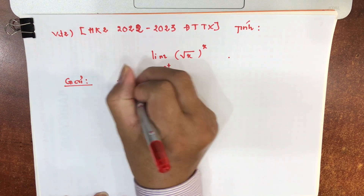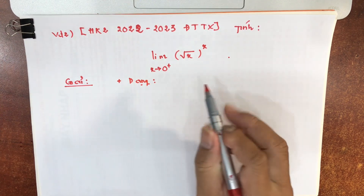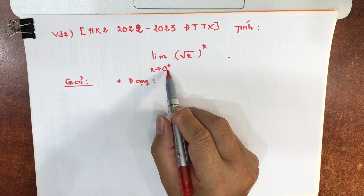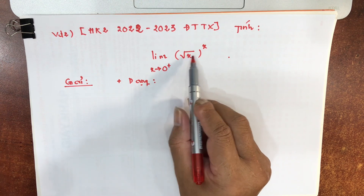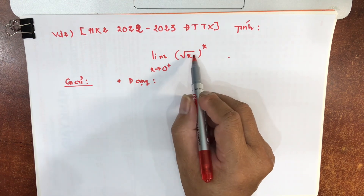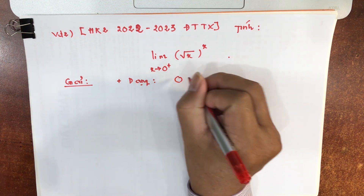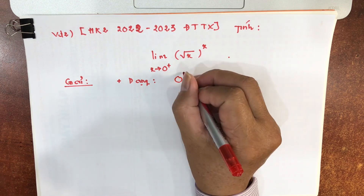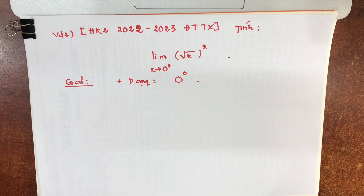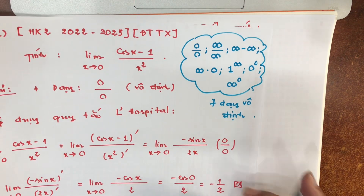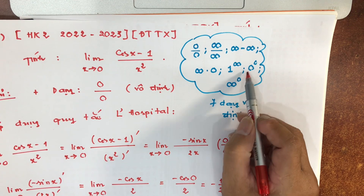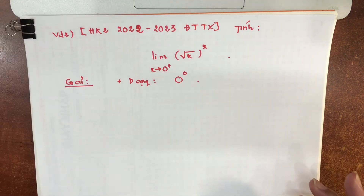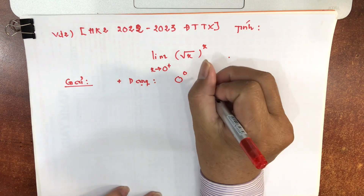Việc đầu tiên: cái giới hạn này nó có dạng gì? X tiến về 0⁺ có nghĩa là x nhận những giá trị dương và rất gần 0 — ví dụ x = 0.0001. Căn bậc 2 của x khi x→0⁺ rõ ràng là 0; trên mũ x tiến về 0. Như vậy đây chính là dạng vô định thứ 6: 0 mũ 0. Dĩ nhiên là dạng vô định rồi.